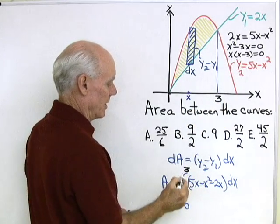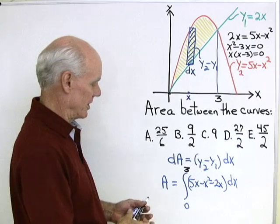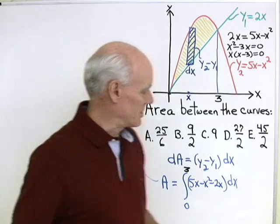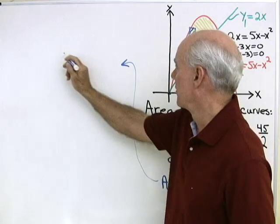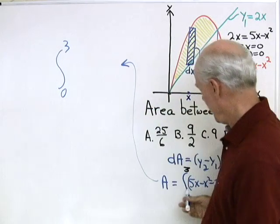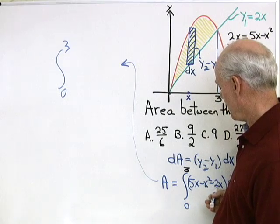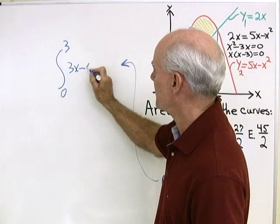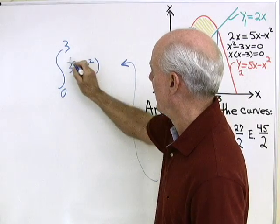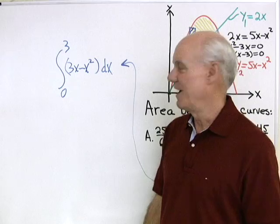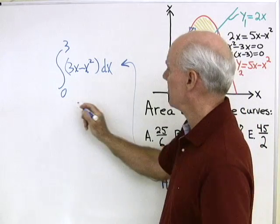I'm going to integrate from 0 up to 3. So I've got the integral from 0 to 3 of 5x minus x squared minus 2x, which is 3x minus x squared dx when I simplify.